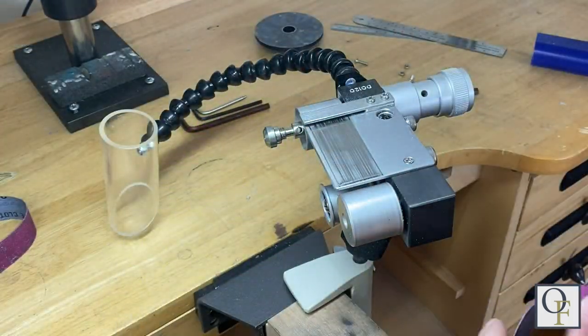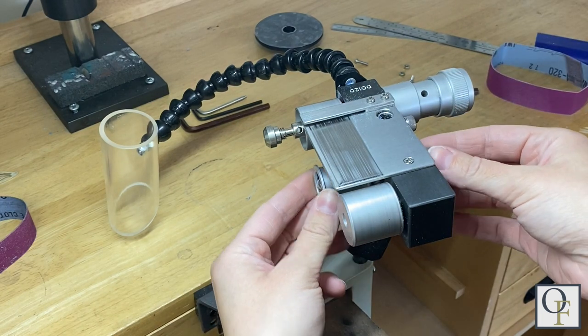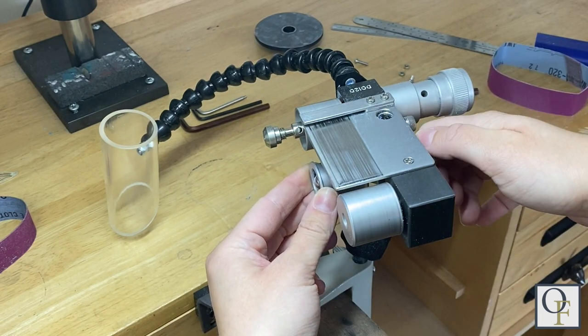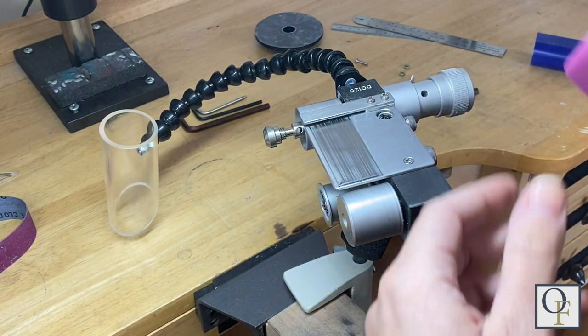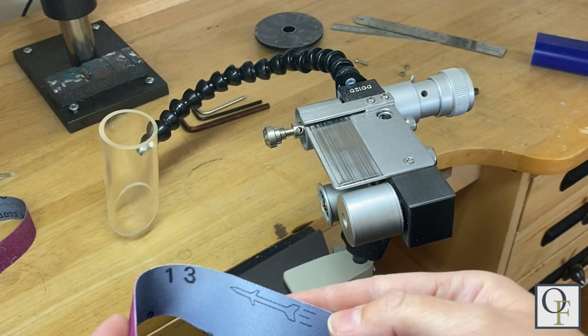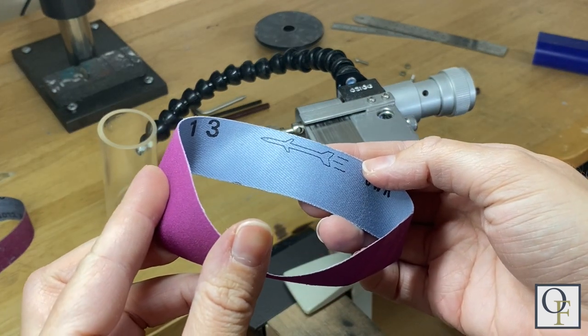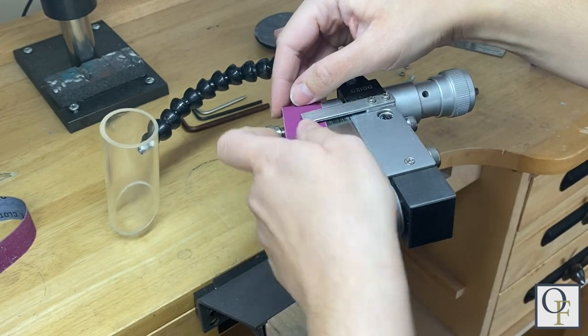Before attaching the disc sander we want to attach our ruby belt to the belt sander. Start loosening the center screw so that the middle spool is mobile. Before attaching the ruby belt make sure the arrow is pointing in the correct direction. This will be pointing towards the back of the sander.